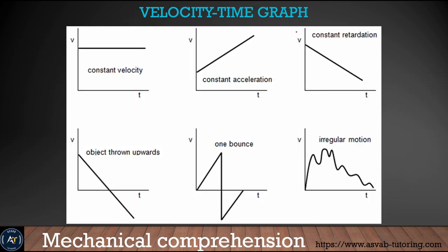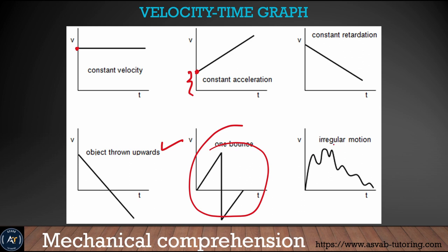The next thing we'll learn is the velocity-time graph. A lot of times students are asked in the test what graph is what, so make sure you know both the distance-time graph and velocity-time graph. The first term is constant velocity, which looks like a straight line. Next is constant acceleration — you are starting at a certain velocity and speeding up. Then constant retardation. Next is an object thrown upward — the velocity-time graph looks like that. If you throw a ping pong ball after the first bounce, the velocity-time looks like that. The last one is irregular motion — stopping and going, stopping and going.